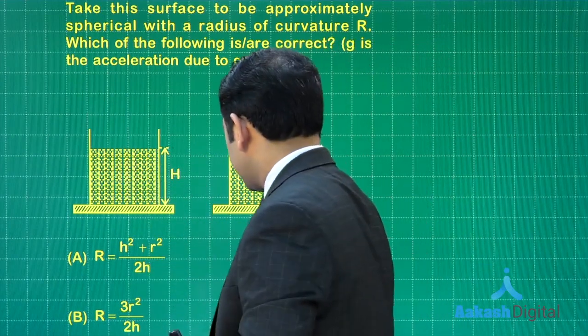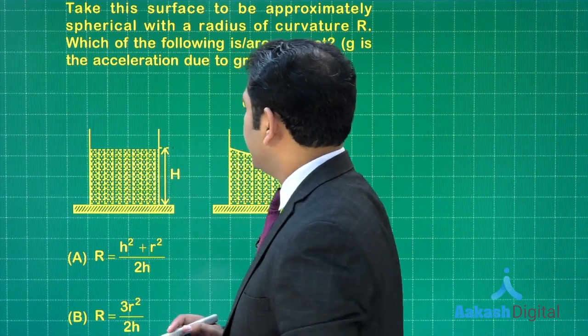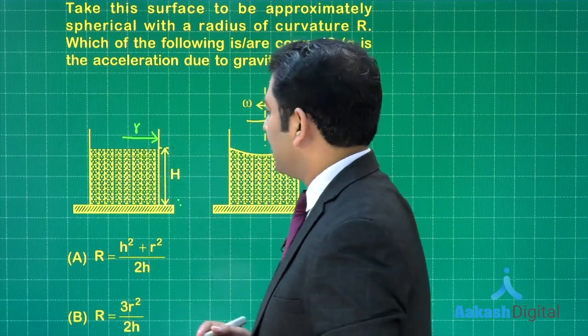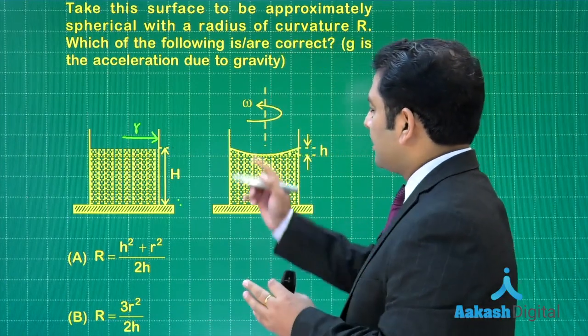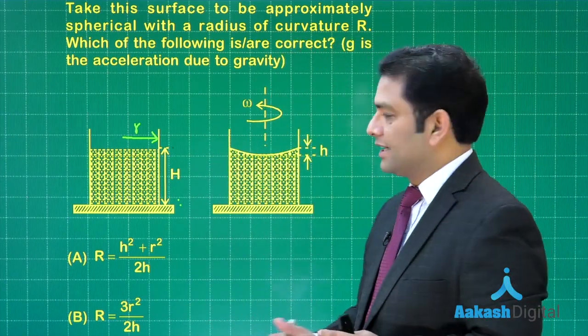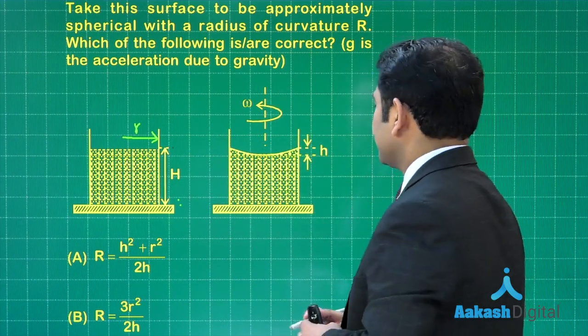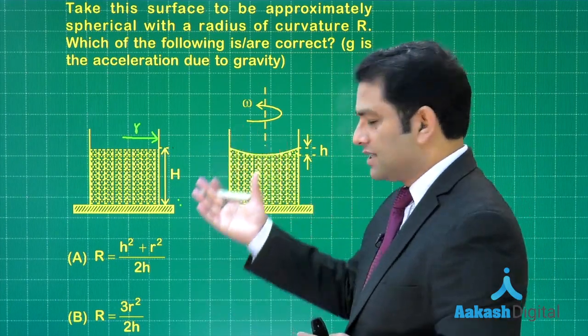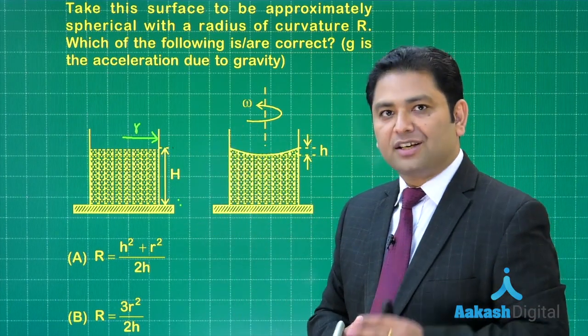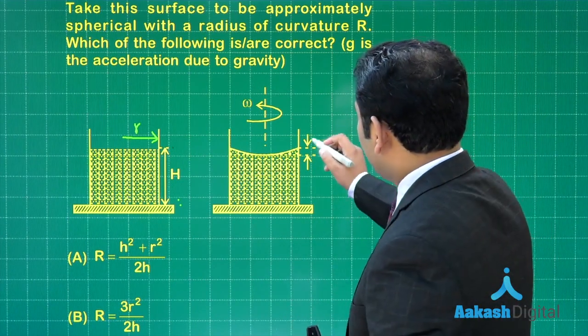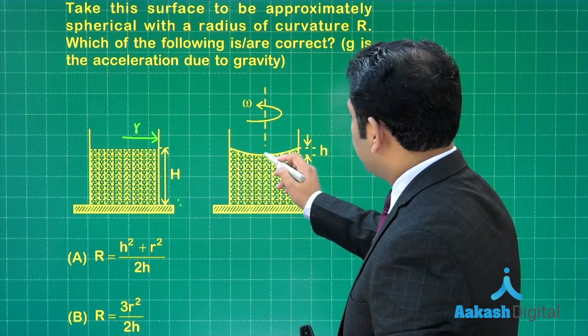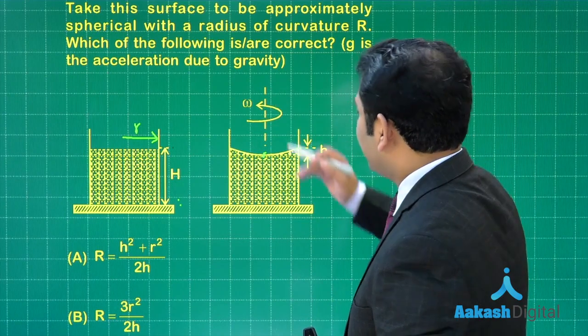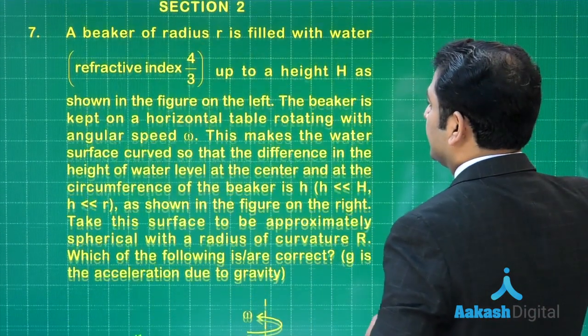The initial condition is this: the refractive index is 4/3, and the radius has been given as small r. Now this beaker is started rotating about a vertical axis with an angular velocity omega. This is a straightforward article where the free surface starts forming a paraboloid shape. Small h is the distance between this point and the top point—we are considering the y distance, the height.